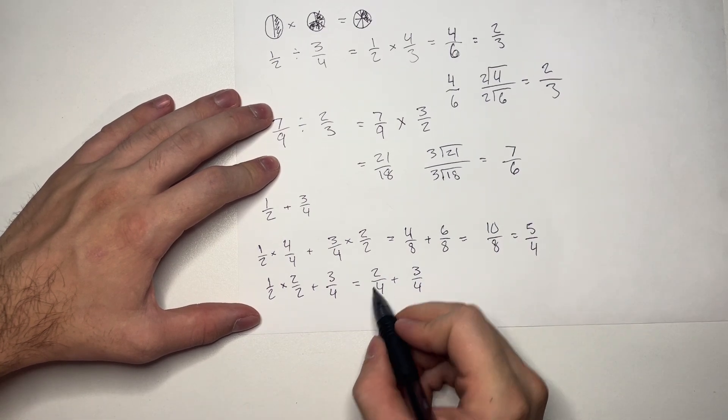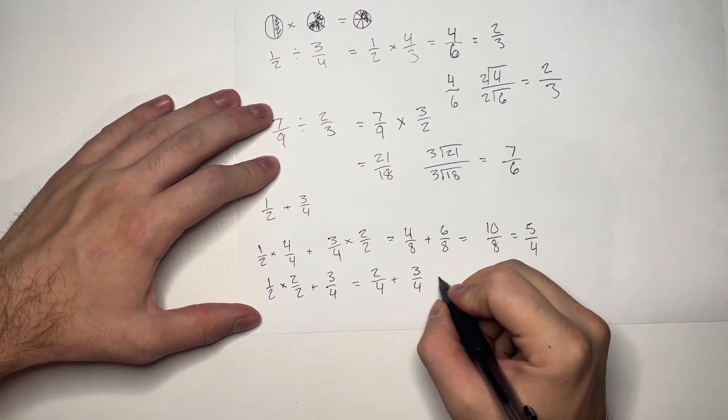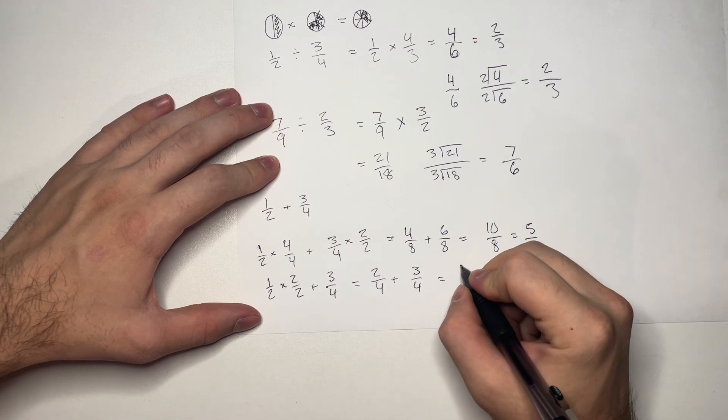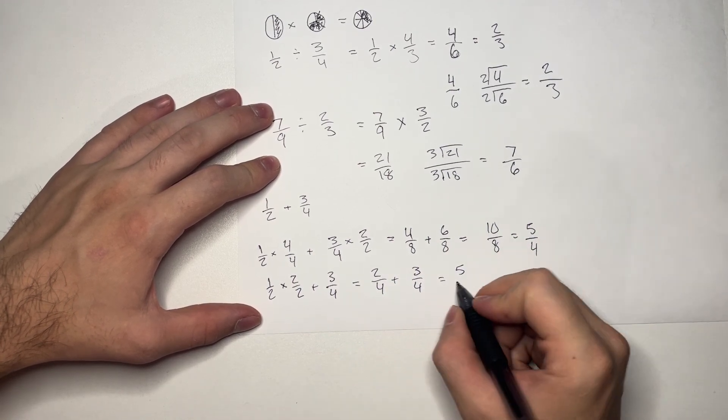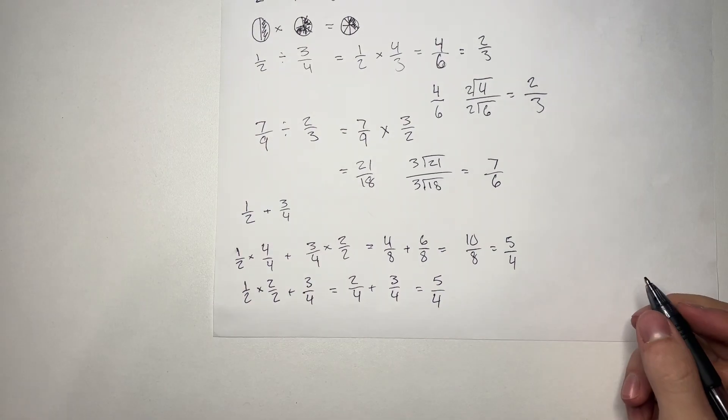Plus 3 over 4. And again, you can clearly see 2 over 4 is equal to 1 half. And now, we add 2 and 3, which is 5. And we keep our denominator the same. 5 over 4.